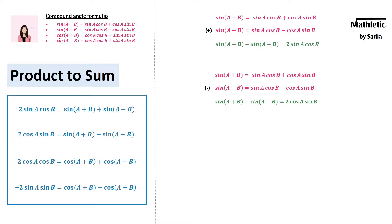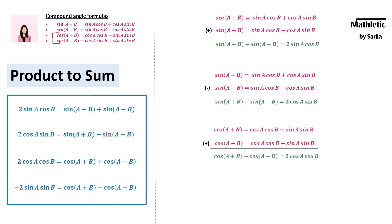For the next two formulas, we follow the same process but use the cosine-related compound angle formulas. Using these two equations and adding them up, we get cos(a+b) plus cos(a−b) on the left side. On the right side, the sine terms cancel out and we are left with 2cos(a)cos(b). That is the third formula.